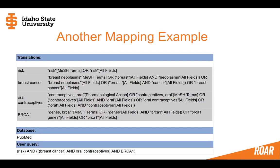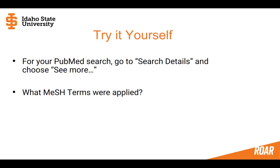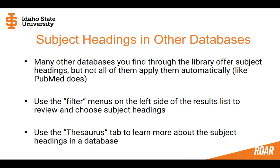Here's another mapping example that's interesting. I put in 'risk,' 'breast cancer,' 'oral contraceptives,' and 'BRCA1,' and almost all of them translated into a mesh term. Even something as broad as 'risk' is used as a tag in the PubMed database. To see this in action, go to PubMed, put in some keywords, and pop open the little caret next to your search in the search history to see the details — you can see what mesh terms were applied.